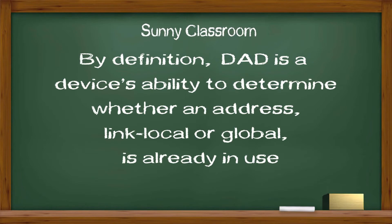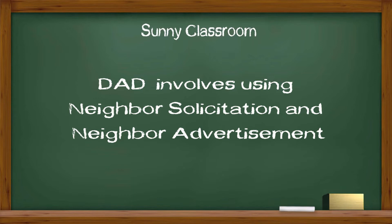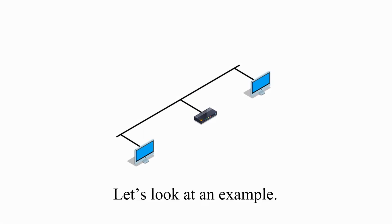By definition, DAD is a device's ability to determine whether an address — link-local or global — is already in use by another device, regardless of whether it was assigned using SLAAC, DHCPv6, or manual configuration. DAD involves using neighbor solicitation and neighbor advertisement messages. Let's look at an example.